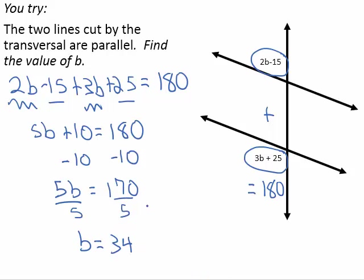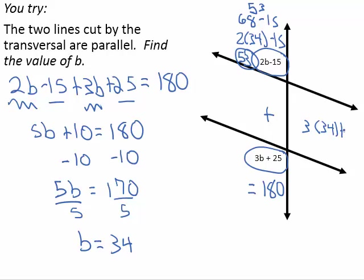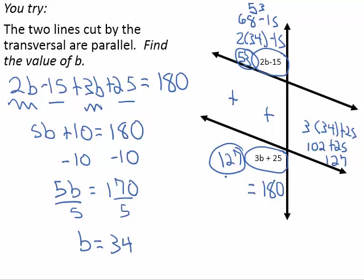We should check 34 back into both of the b values for the angles. 2 times 34 minus 15 is 68 minus 15, which gives us 53. For the other angle, 3 times 34 plus 25 is 102 plus 25, which is 127. And you'll note that 127 plus 53 is 180 degrees, so b equals 34 is indeed our solution.